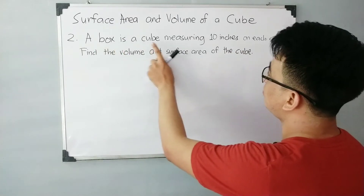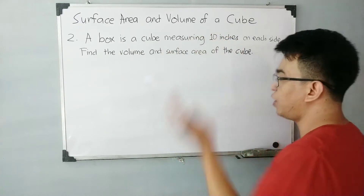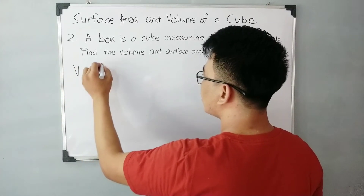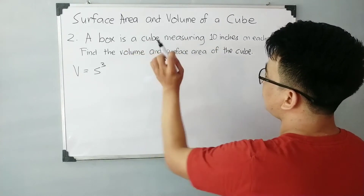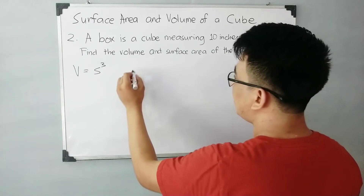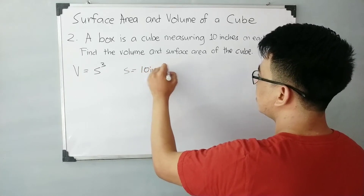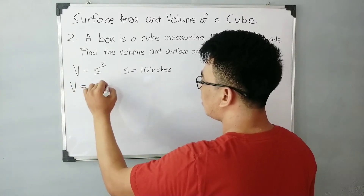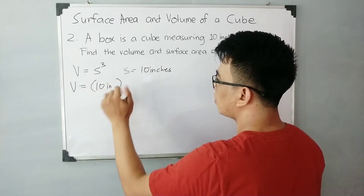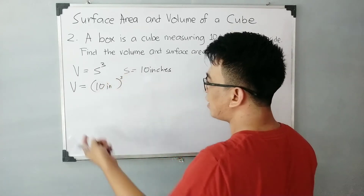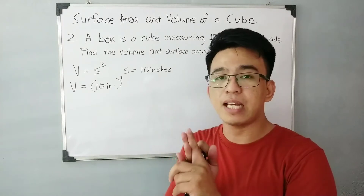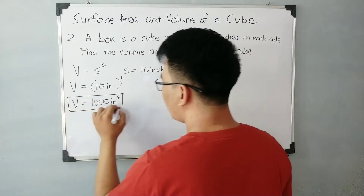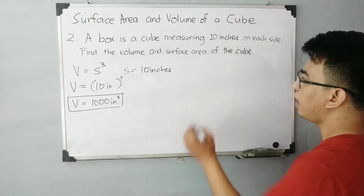Here's the problem: A box is a cube measuring 10 inches on each side. Find the volume and surface area of the cube. Even without a figure, this problem is easy. Let's start with the volume: V is equal to S cubed. Given the problem, a box is a cube measuring 10 inches on each side, meaning S is equal to 10 inches. Substituting: V is equal to 10 inches cubed, which is 10 times 10 times 10. That gives us 1,000. So the volume is 1,000 cubic inches.